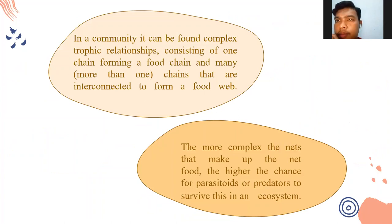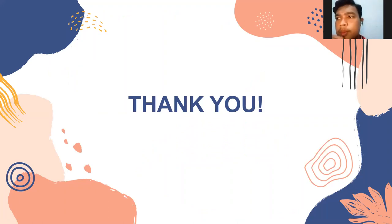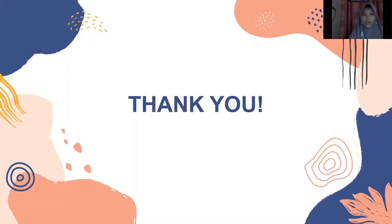A collection of more than one species forms a community where species interact mutually and there can be hidden relationships in that interaction. In a community you can find producers such as plants, first consumers or herbivores or phytophagous organisms, second consumers or carnivores such as parasitoids or predators, third consumers or carnivores such as hyper-parasitoids, and decomposers that eat organic matter. In a community there can also be found complex trophic relationships consisting of food chains and food webs that are interconnected. The more complex the food web, the higher the chance for parasitoids or predators to survive. This is the end of our presentation. If you have a question, don't forget to mention your name and your number in the comment section. Thank you.